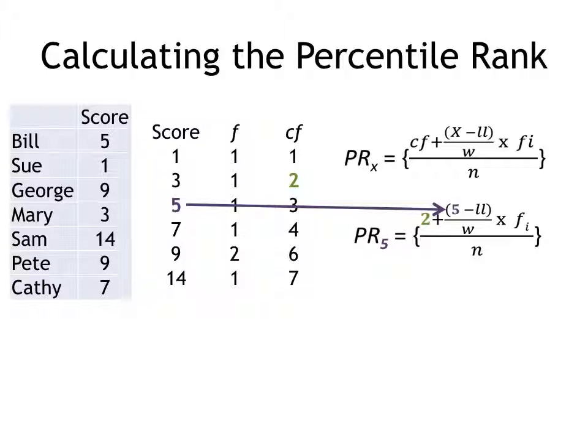X refers to the score we're investigating. Remember, it's the score of five - I want to know what its percentile rank is. We use the lower limit for the interval with the score of five. The lower limit for a score of five is 4.5.